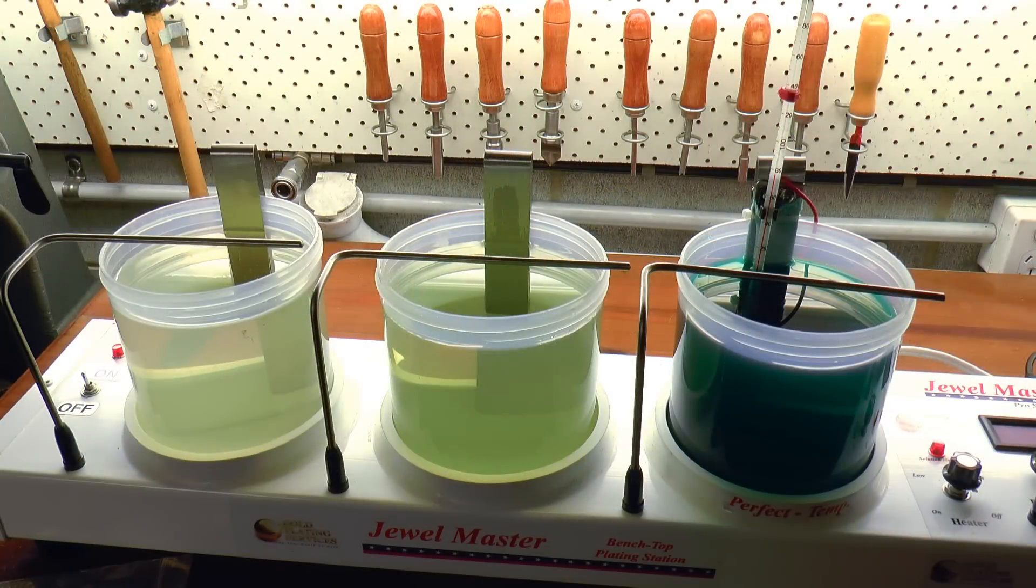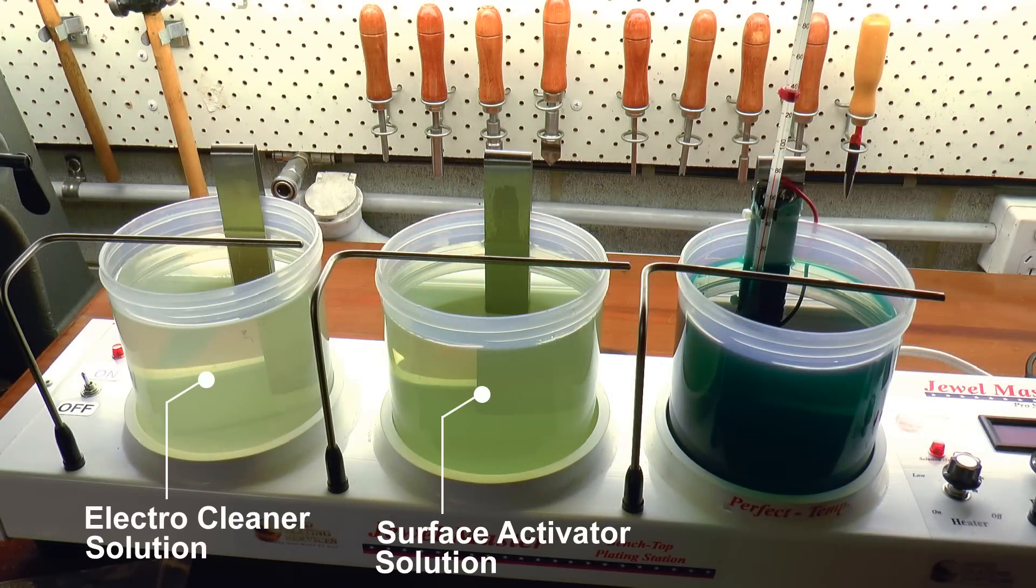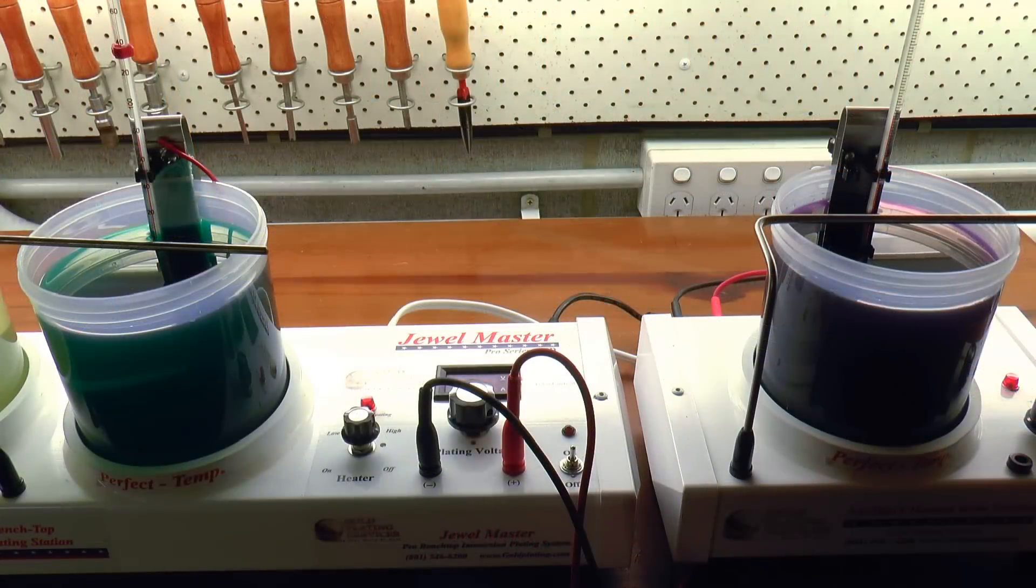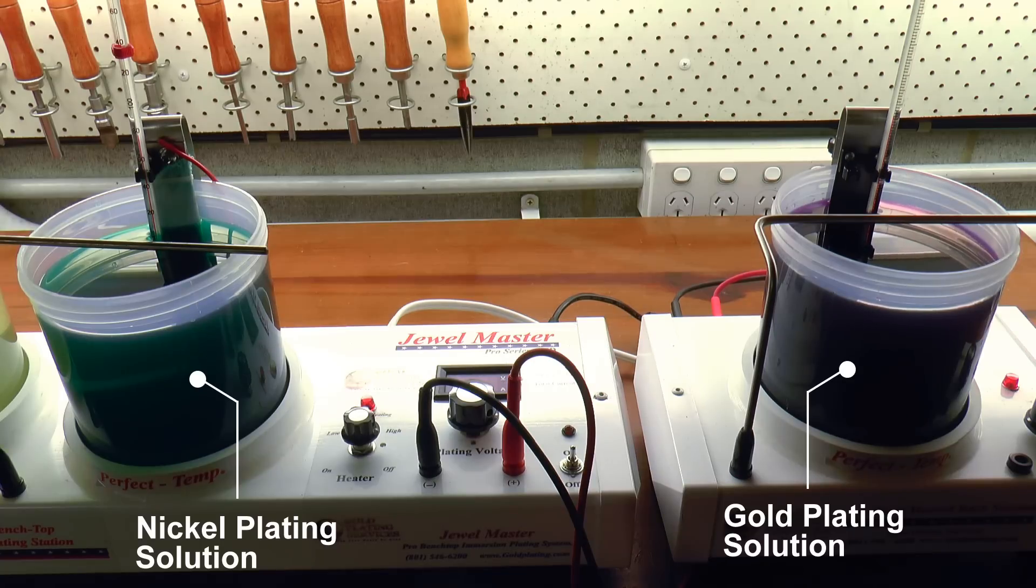The bath solutions, in order of use, are electro cleaner, surface activator, and the plating solution. And in this case, I have two plating solutions on the go at once, nickel and gold, and I'll talk about why that is a little later in the video.